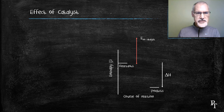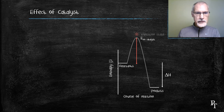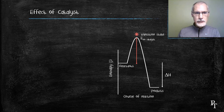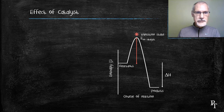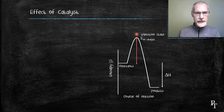So in order to proceed from reactants to products, the reaction follows this path. At the top of that hill, we form what's called a transition state, where my species essentially contains a combination of both product and reactant, on the verge of either returning to reactant or proceeding forward to products.